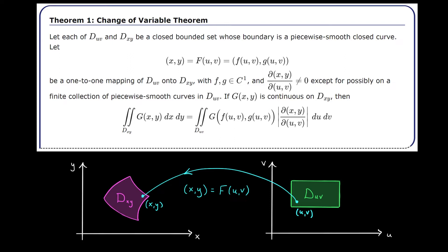Specifically, suppose we're trying to integrate a function g(xy) throughout region dxy. We could instead integrate over region duv, but we have to make some changes to our integrand. We're going to change the x and y terms into u's and v's. We also have to throw in this extra term: the absolute value of the Jacobian partial xy by partial uv. This term accounts for any distortions in area that occur when we change coordinate systems. The advantage is that the integral on the right may be much nicer — the bounds may be easy to describe in the uv plane, or the integrand itself may simplify dramatically.